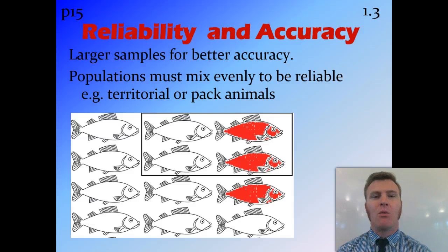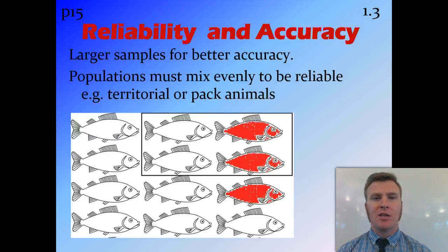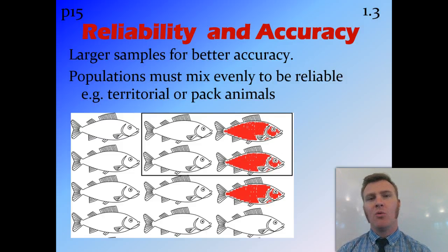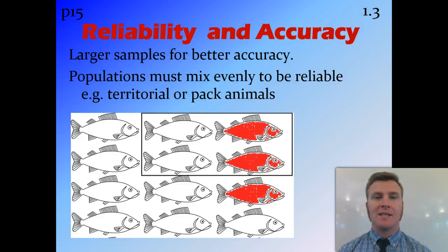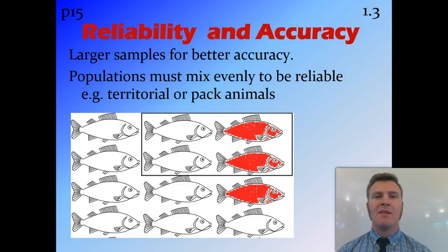To improve the accuracy, it's important to have large sample sizes, and the population must mix evenly — so you need to allow time for that to occur. The capture-recapture method can't work with territorial or pack animals that don't mix randomly with their population. For example, if I collect a pack of six wolves and tag them, then let them out, those six wolves will stay together. So in my second capture, if I get a different pack, none will be tagged, or if I get the same pack, all will be tagged — making our results invalid.